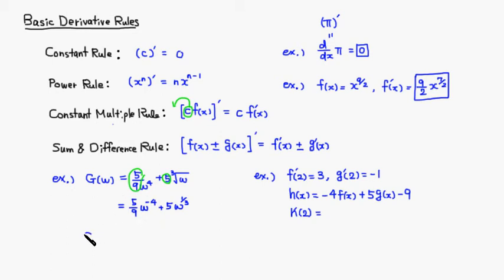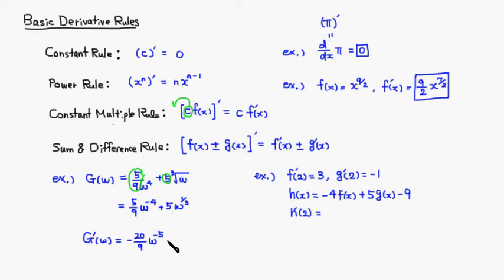Now we can find the derivative. G'(w): bring the negative 4 down in front and multiply by 5/9, giving negative 20/9, times w to the negative 5 power (subtracting 1 from negative 4). Then bring the 1/3 down and multiply by 5, giving 5/3, times w to the negative 2/3 power (subtracting 1 from 1/3). So g'(w) = (-20/9)w^(-5) + (5/3)w^(-2/3).